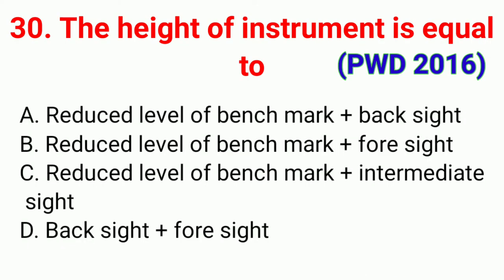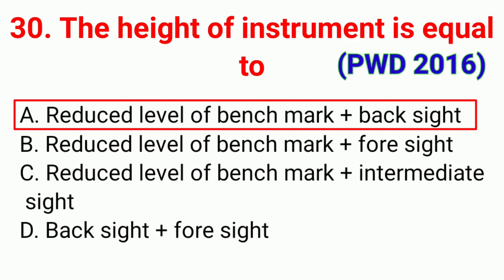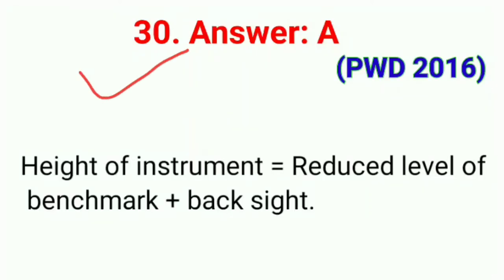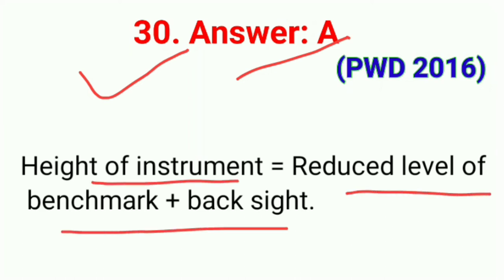Question number thirty: The height of instrument is equal to. The correct answer is option A: reduced level of benchmark plus back sight reading.